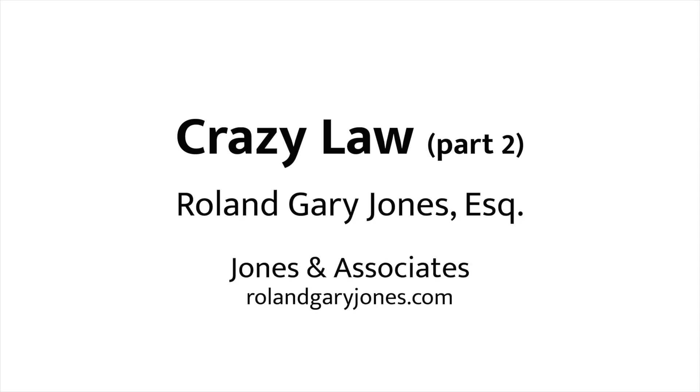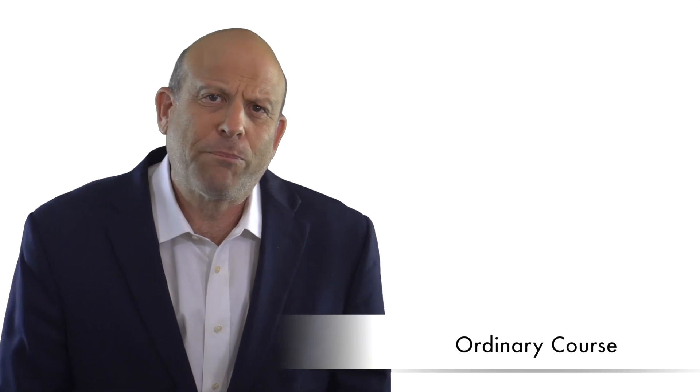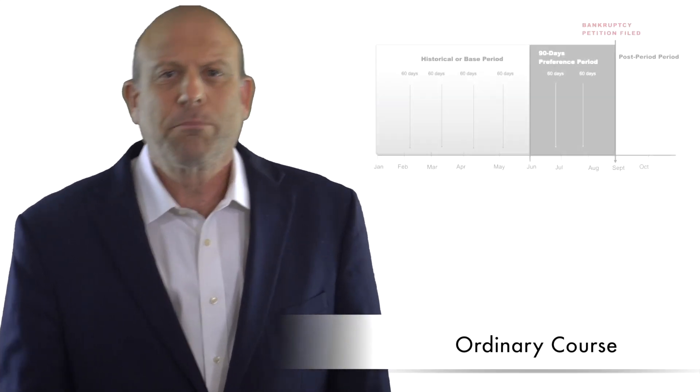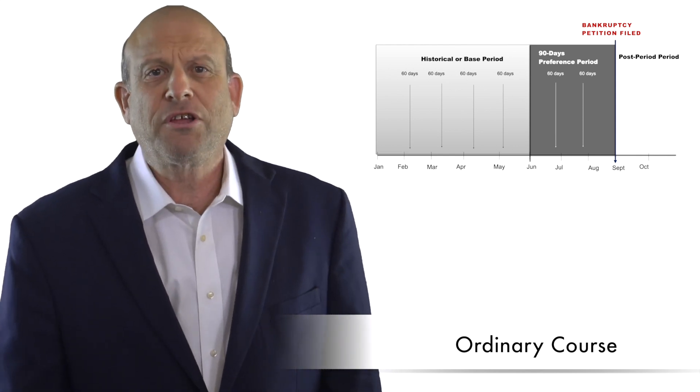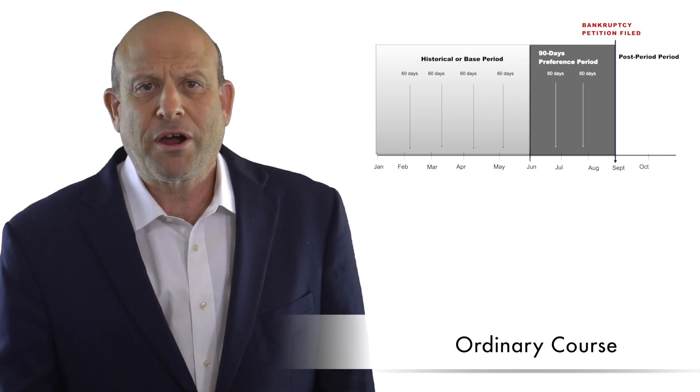The first defense I'm going to discuss is called the Ordinary Course Defense. The way this defense works is to compare how you were paid in the three-month preference period with how you were paid in a comparison period, typically two or three years prior to the bankruptcy.